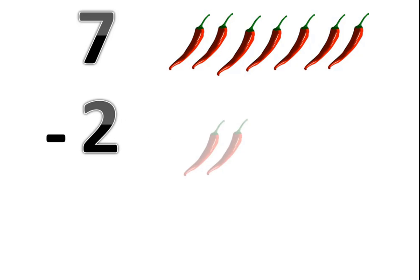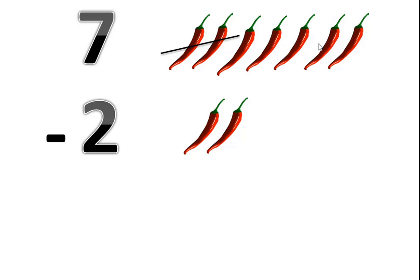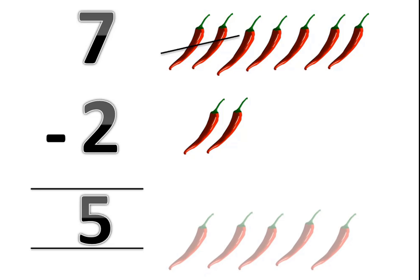Let's move. 7 red papers minus 2 red papers. We have 7 red papers and want to take away 2. So how many red papers are left? Let's count: 1, 2, 3, 4, 5. 5 red papers are left.